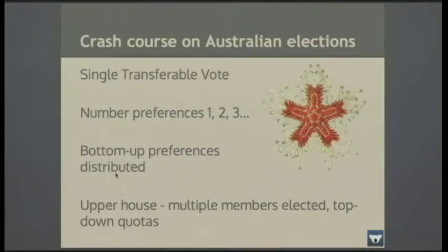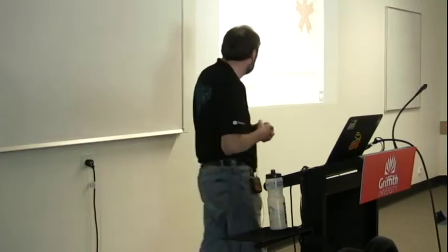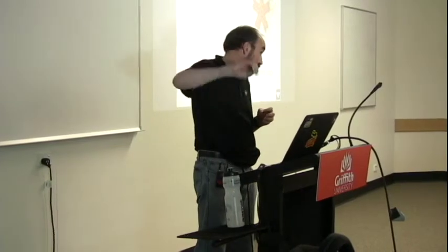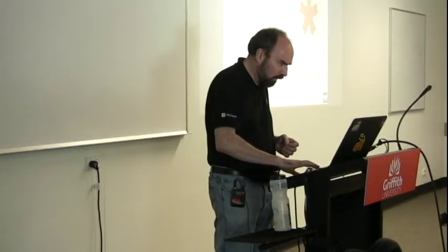A brief course on Australian elections and voting system. Look up 'single transferable vote' on Wikipedia for detail. We number preferences for candidates: one, two, three, four. Bottom-up preferences are distributed — the lowest ranking candidate's preferences go to other candidates, and eventually someone ends up with a majority. In the upper house and the Australian Senate there's more than one member elected, so candidates with very low votes are eliminated and preferences distributed, and if you meet a quota, leftovers are distributed to other candidates.